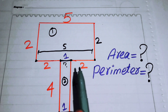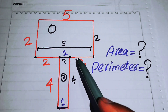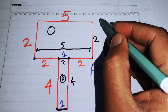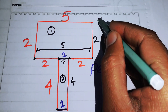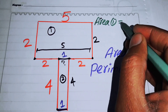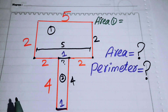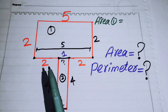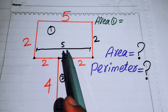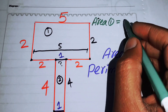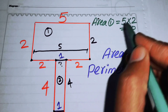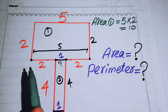Now we find the area of the region. We separately find the area of each rectangle. The area of Rectangle 1 equals length times breadth. The length is 5 and the breadth is 2, so the area of Rectangle 1 is 5 × 2 = 10.